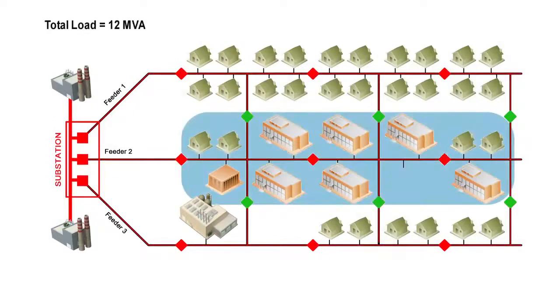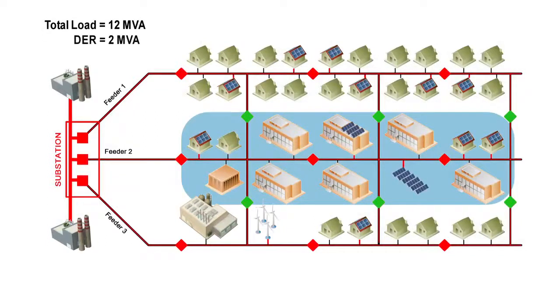So a feeder may be supplying 12 MVA of load, but because the solar is providing two of that MVA, it appears that it's only providing 10 MVA. So you get this masking effect.